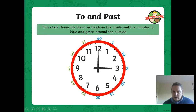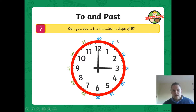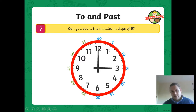Then another 5 minutes takes us to the 10, and another 5 minutes takes us to the 3. Can you count the minutes in steps of 5? So we've got 5, 10, 15, 20, 25, 30 - counting those intervals as we go around the clock face. As the minute hand ticks around, it's counting 1, 2, 3, 4, 5, then 6, 7, 8, 9, 10, and so on - but it's jumping in those 5s: 5, 10, 15, 20, 25, 30.